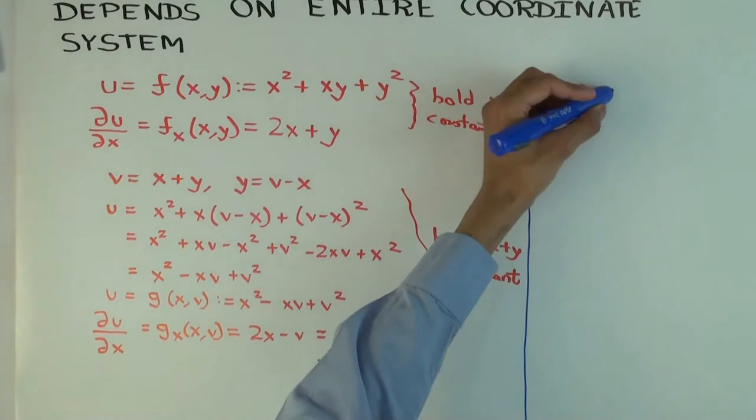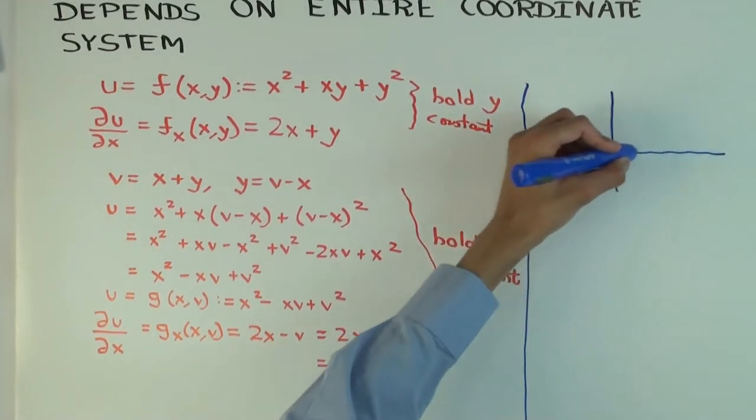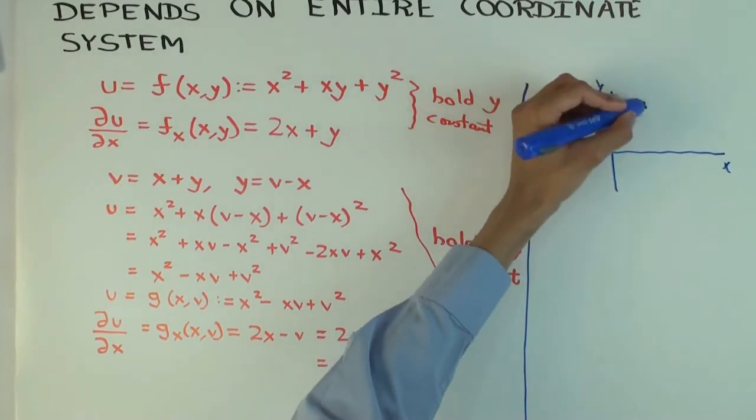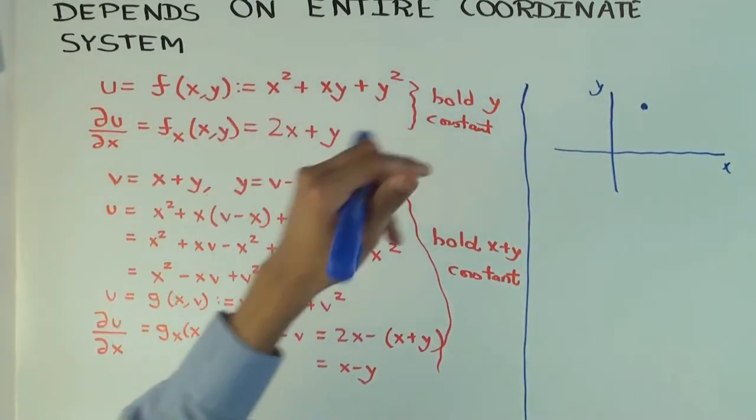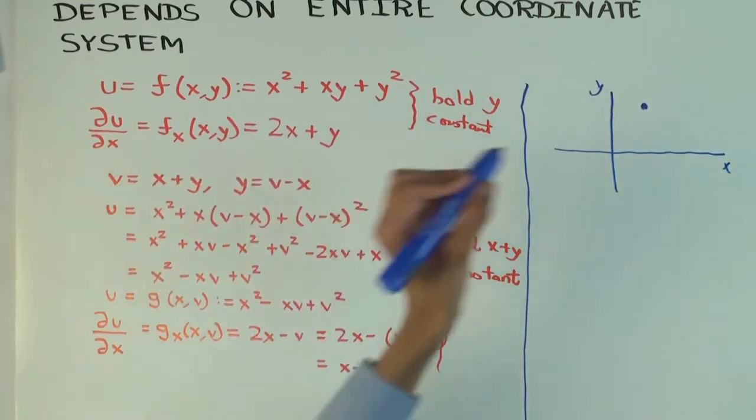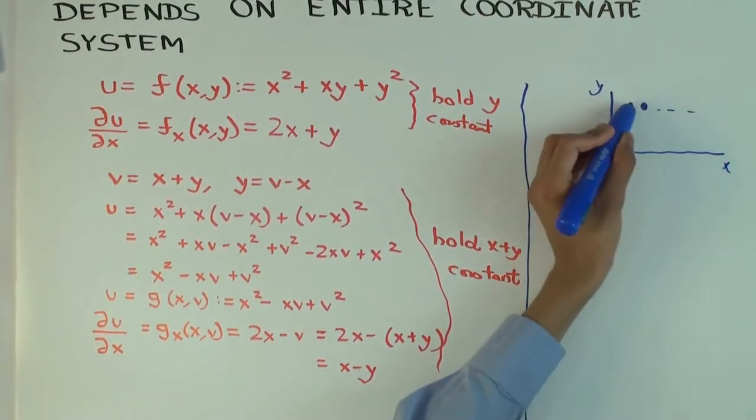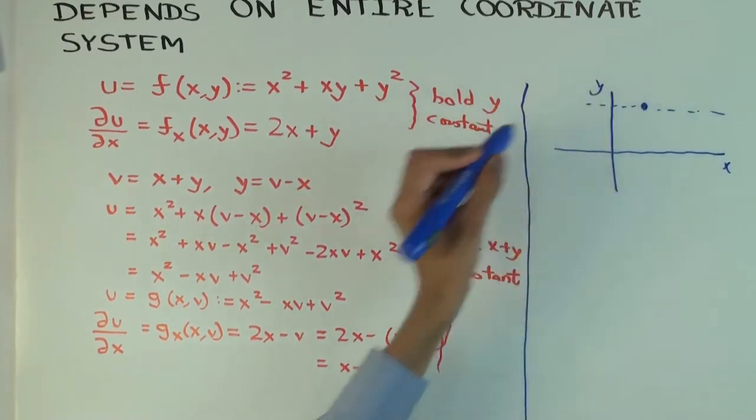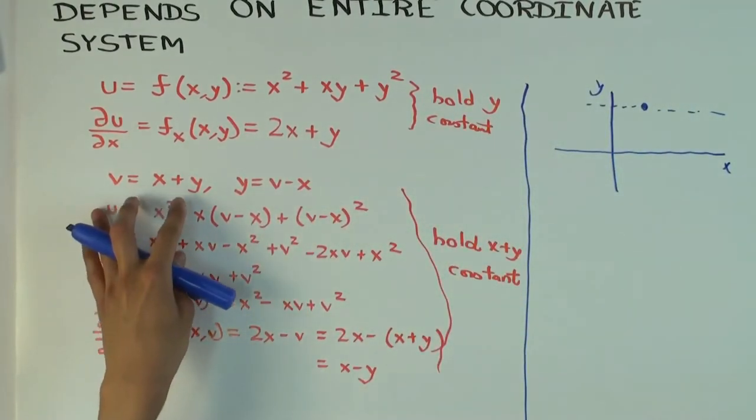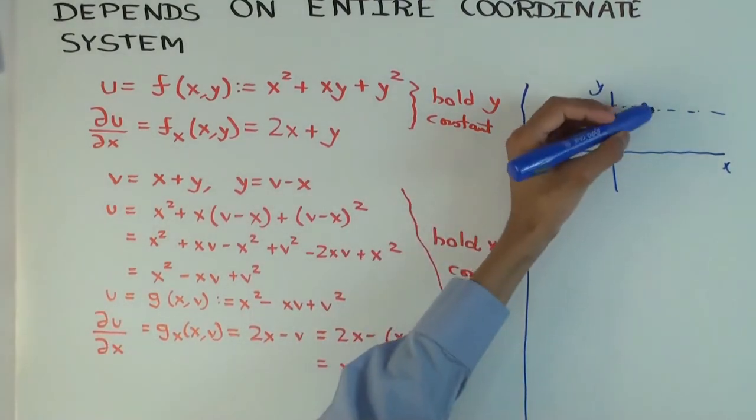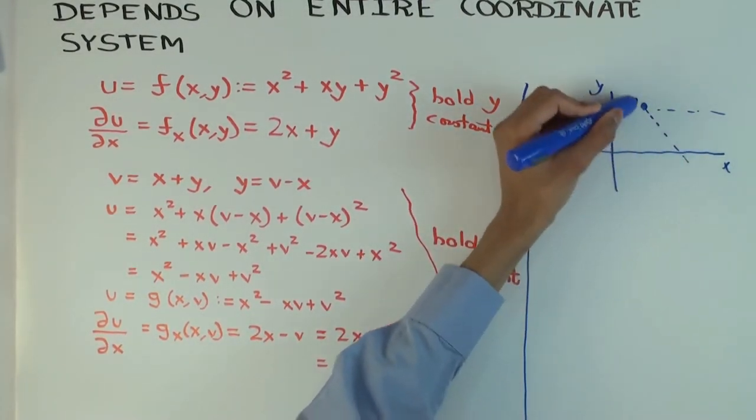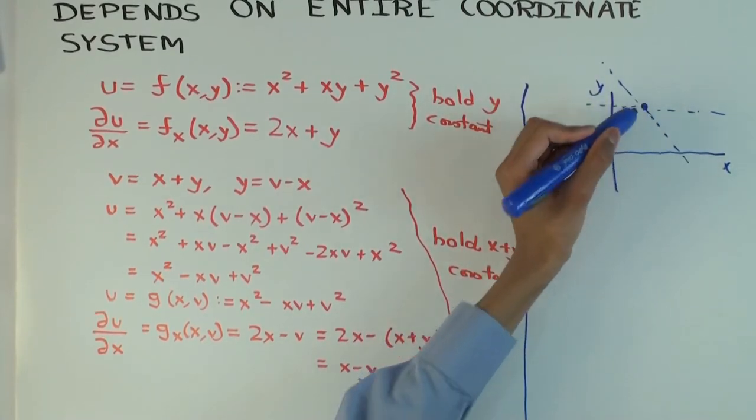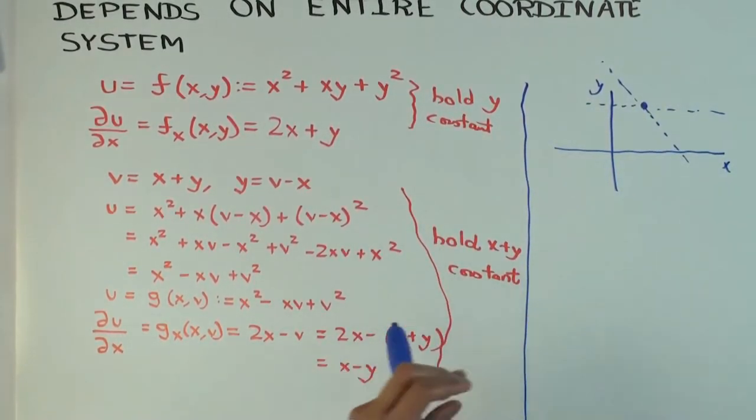Let me first quickly recap how our original explanation went. So this is the xy plane. You have a point here. It's a point, a possible input. If you're trying to calculate f sub x of x, y, you're basically moving along the horizontal line and trying to figure out how it changes. And if you're trying to figure out this partial derivative, we are basically moving along this line where x plus y is constant and figuring out how the function changes.